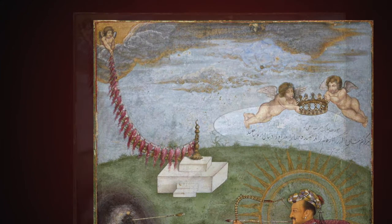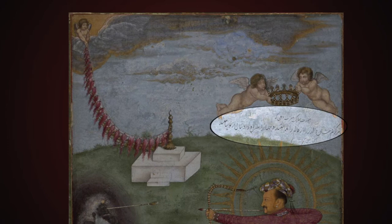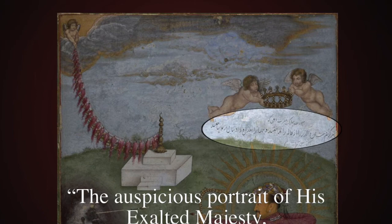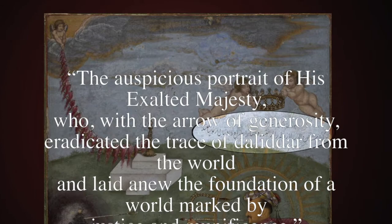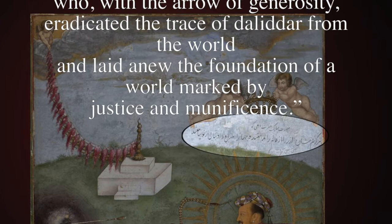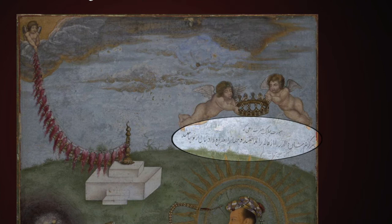With all the pictorial details, there is one more thing to discuss — these lines written in Persian which say: 'The auspicious portrait of his exalted majesty, who with the arrow of generosity eradicated the trace of the lidar from the world and laid anew the foundation of a world marked by justice and magnificence.' The word lidar comes from the Sanskrit word daritra, which means personification of poverty.